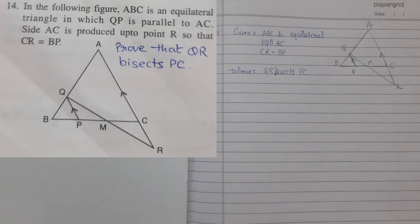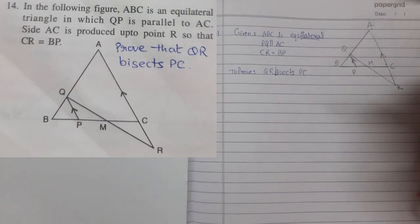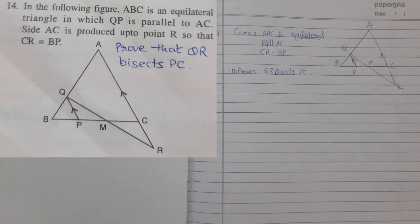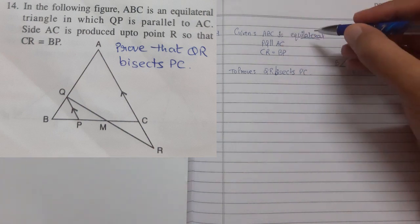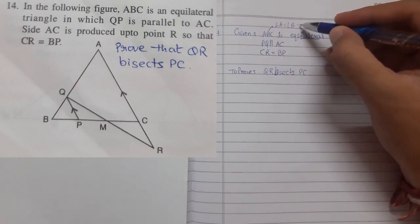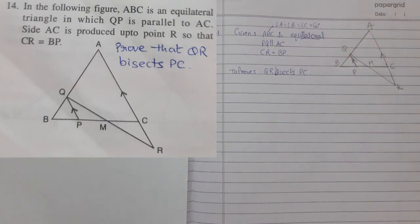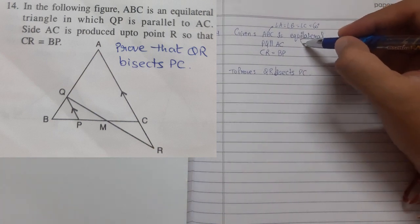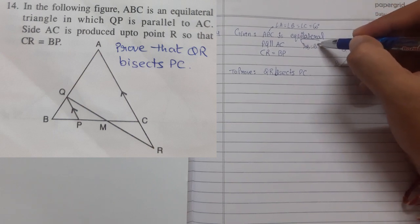In triangle ABC, which is an equilateral triangle, as discussed in the earlier video, whenever they give you a specific triangle or shape, you need to understand what information is given. In an equilateral triangle, all angles are equal to 60 degrees — angle A = angle B = angle C = 60°. Secondly, all sides are also equal: AB = BC = CA.